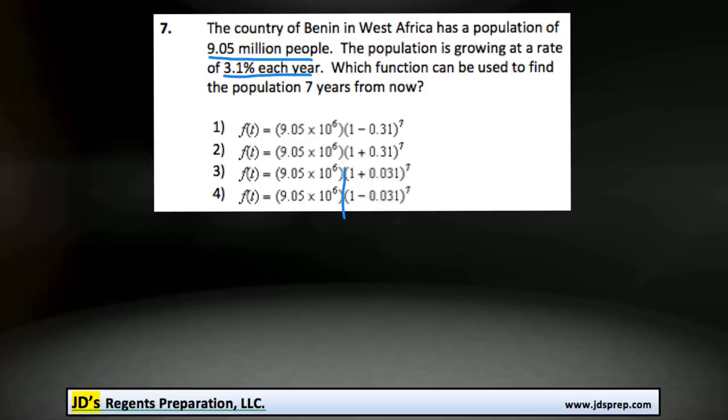So, first of all, we can see that these all share this number in common, 9.05 times 10 to the power of 6. And that's because, if we were to write that out, that is 9.05 times 10 to the power of 6. So you can see that's the 9.05 million that they're talking about, that's the initial value.